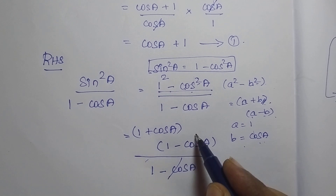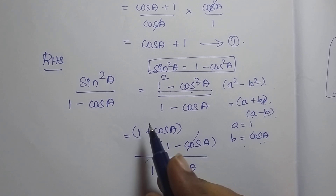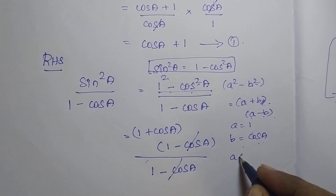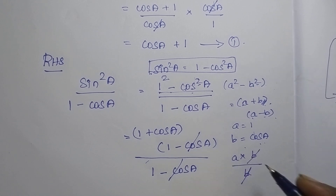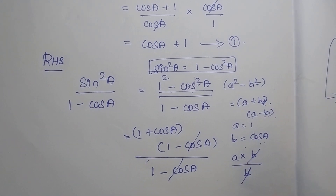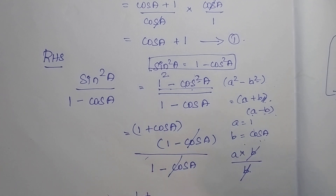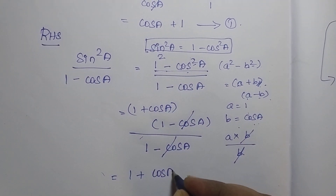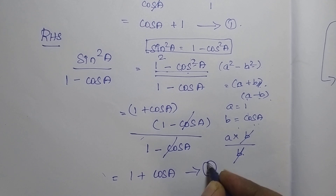This 1 minus cos A and this 1 minus cos A get cancelled, because this is in the format of A into B divided by B. So both get cancelled. The remaining is 1 plus cos A. This is equation 2.